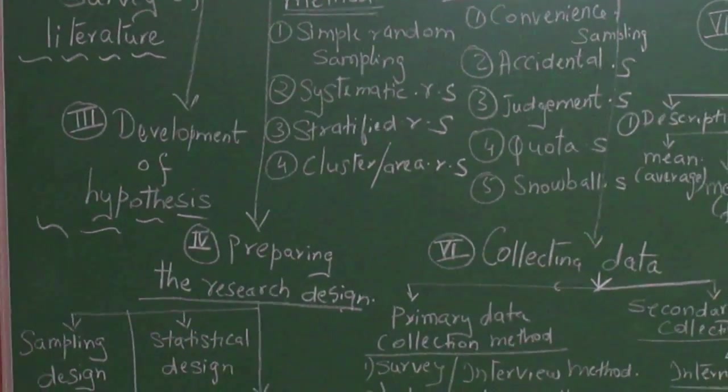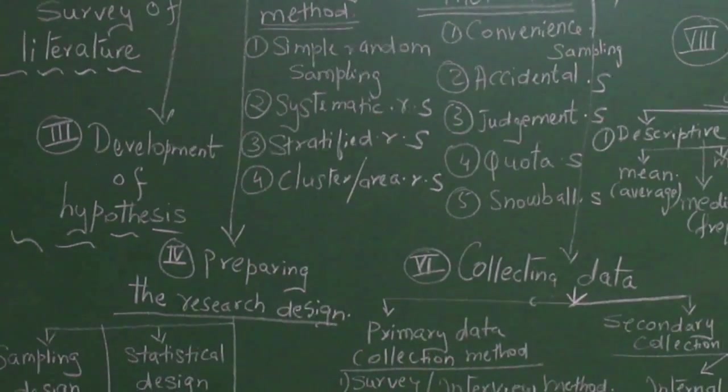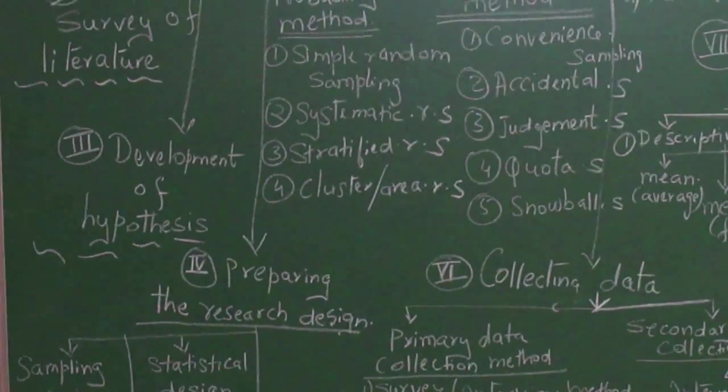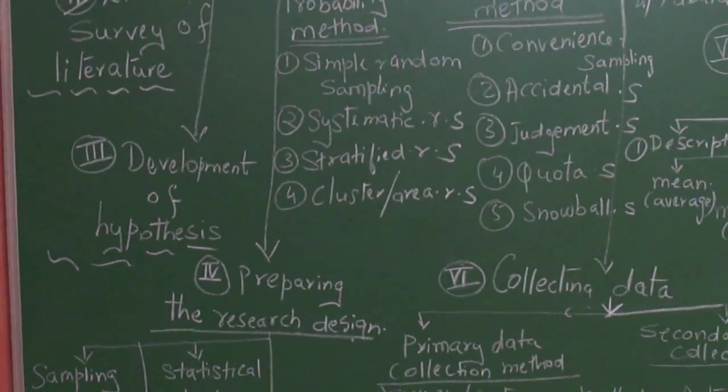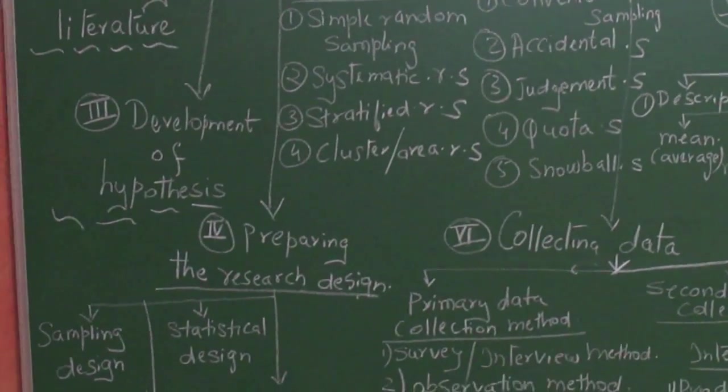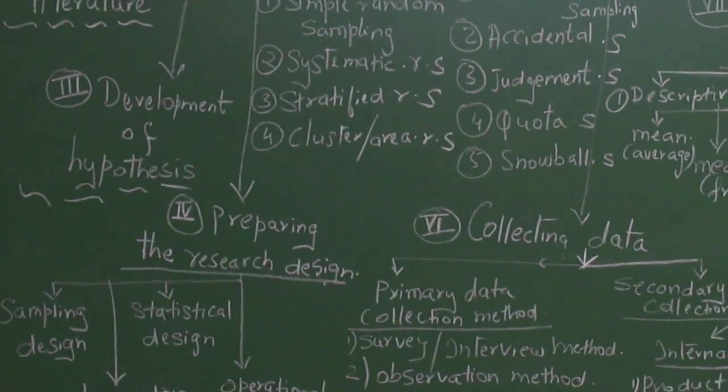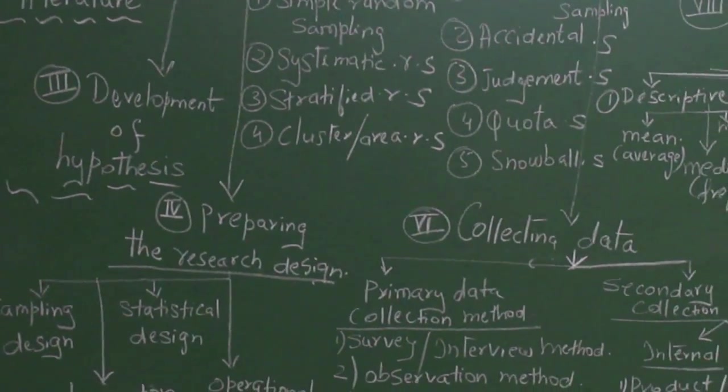In systematic random sampling, it is a little systematic in the sense maybe the 1st, the 5th, the 10th - so all the odd numbers are taken.